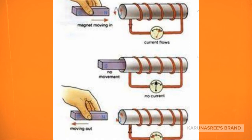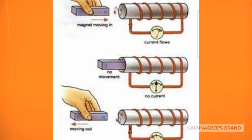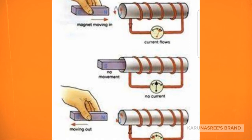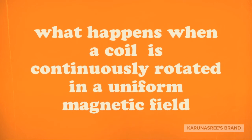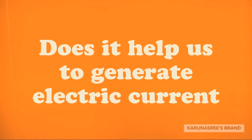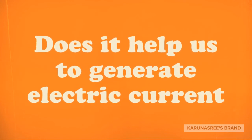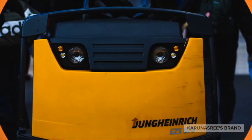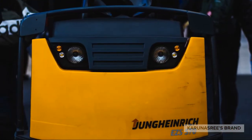This phenomena of getting induced current is called electromagnetic induction. What happens when a coil is continuously rotated in a uniform magnetic field? Does it help us to generate electric current? What is this called?